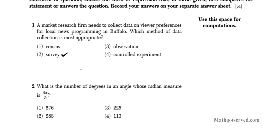Conducting a survey of the people is a good way to do it. Observation doesn't really tell you much about preferences. A controlled experiment will skew the data because you're focusing on a controlled group — for example, a certain sex or a certain age — which skews the data from the research. So a controlled experiment does not work. If you want to get people's view of preferences, it's best to conduct a survey. Option 2 is the best choice here.